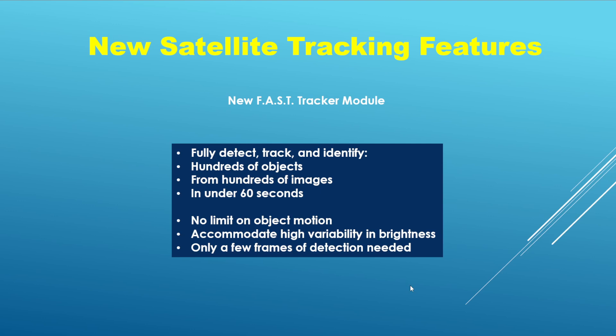FAST can also accommodate very high variability in object brightness, which is exactly what you want because many satellites may be tumbling or rotating, appearing bright at some points in a frame and then dim. So if the object is present on only a few frames — say, on 100 exposures where the object appears in only a few — it will still stand a very good chance of being detected with high confidence. That is a very nice set of features.